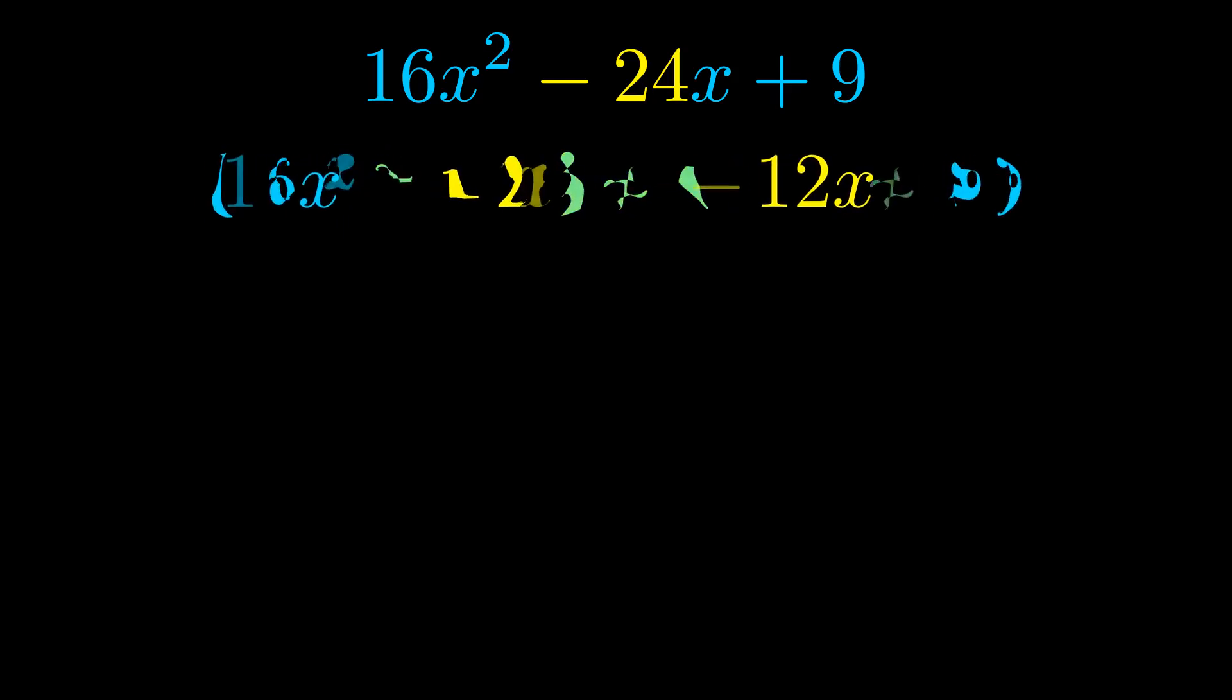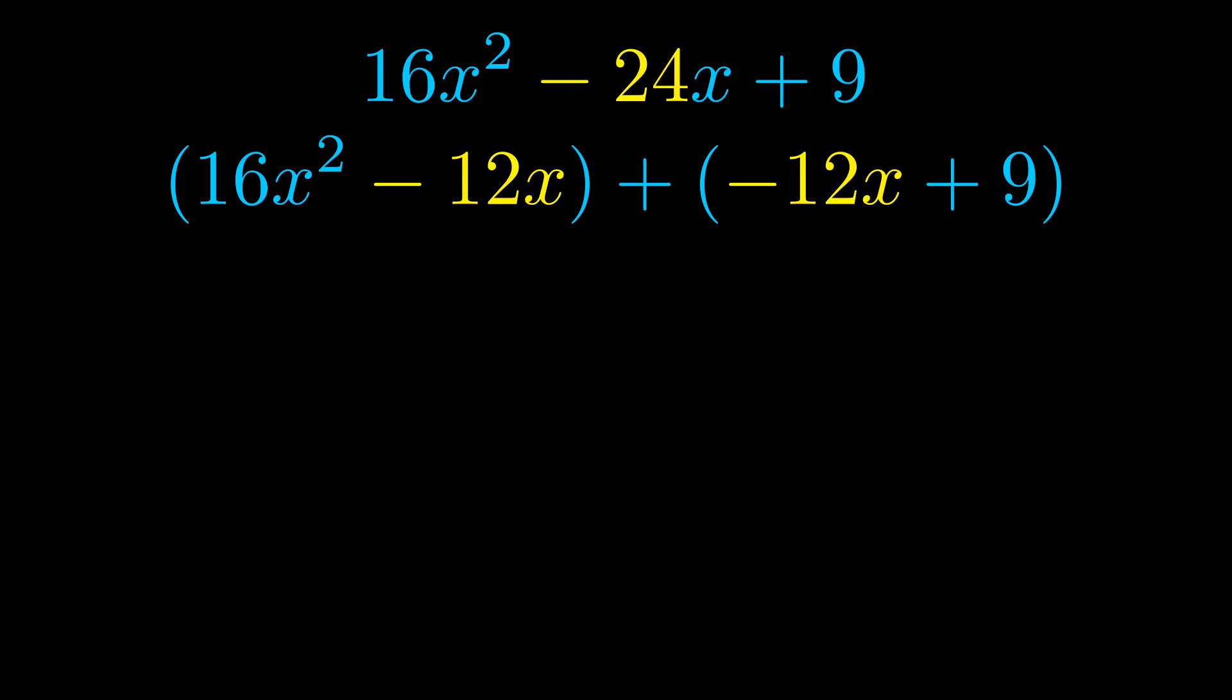Once we've done this, we go ahead and put parentheses around the first term and the last term. And we do that so that we can take the greatest common factor out of both terms. We can see the greatest common factor is now outside in green.